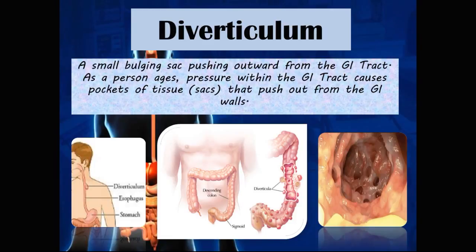Diverticulum — or diverticula in the plural — are small bulging sacs pushing outward from the GI tract. As a person ages, pressure within the GI tract causes pockets of tissue to push out from the GI walls. They are common throughout the GI tract, including esophageal diverticula and, most notably, multiple diverticula in the large colon, particularly in the sigmoid area — which can be visualized on colonoscopy.